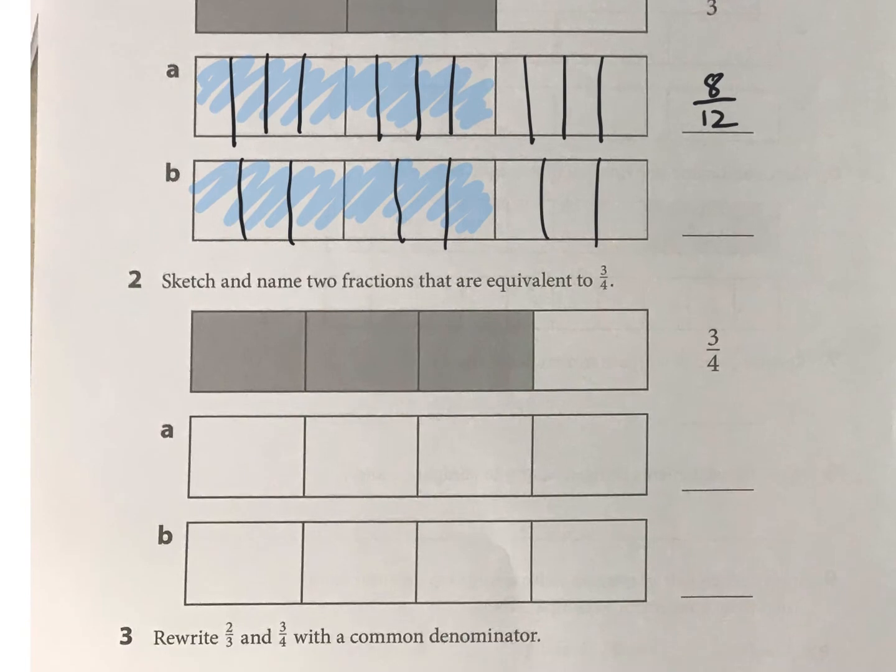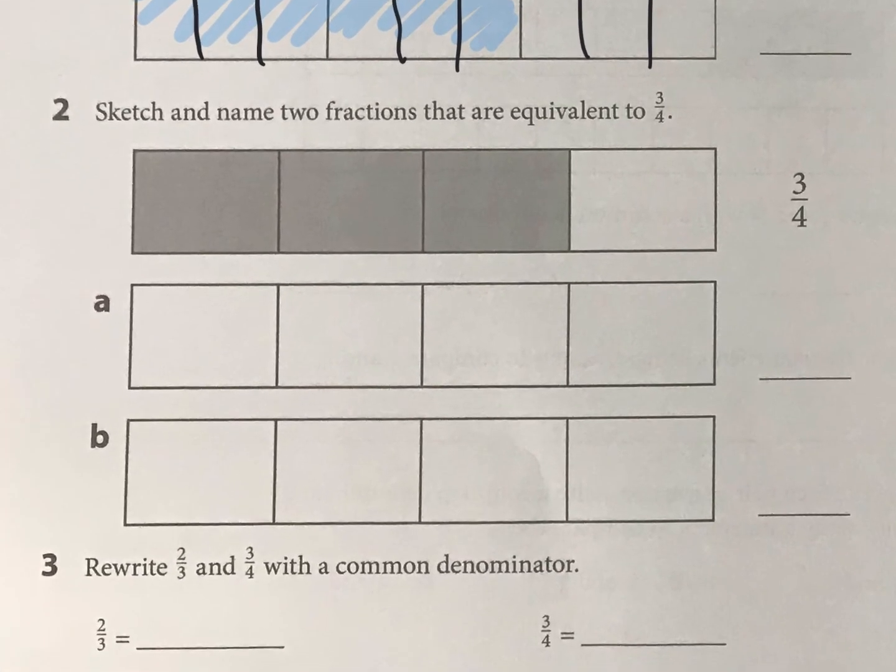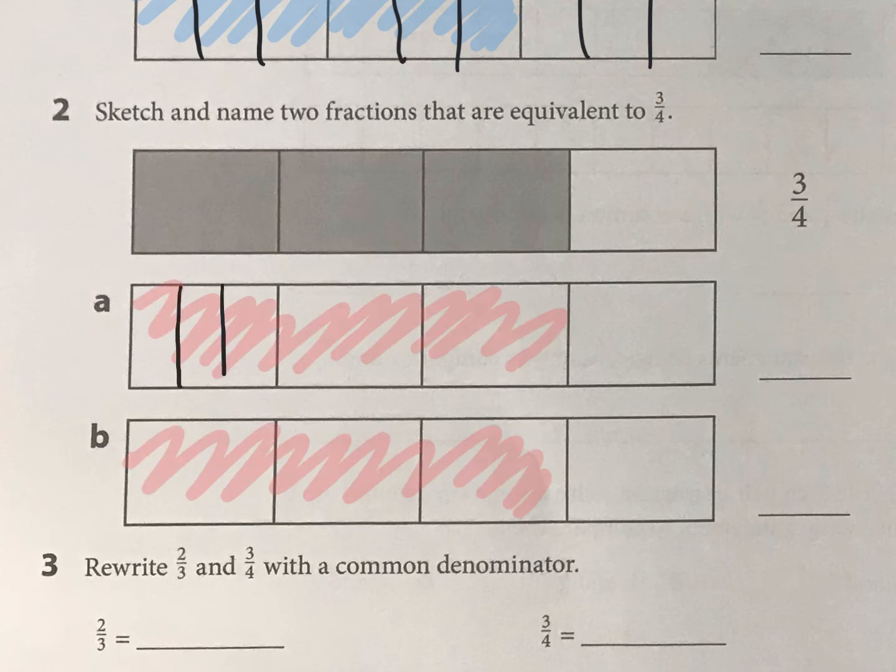And then you're doing the same thing for three-fourths. So maybe this time I'll try thirds. So I'm going to cut each piece into thirds, which I'll do roughly. And then what do I have here? I now have twelfths and how many of my twelfths are filled in. And then choose what you want to do for part B as well.